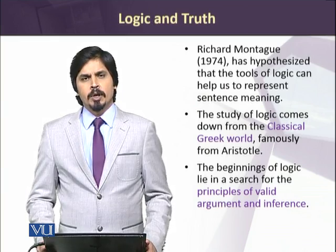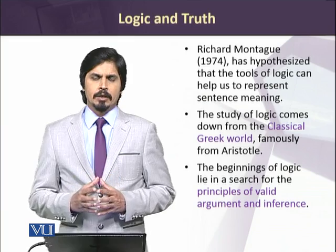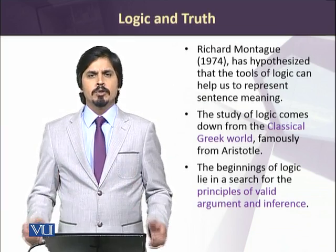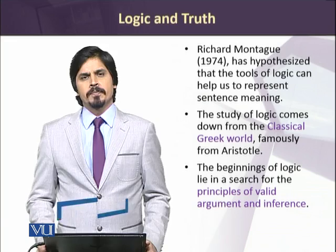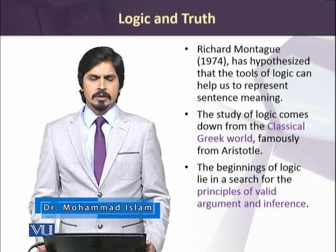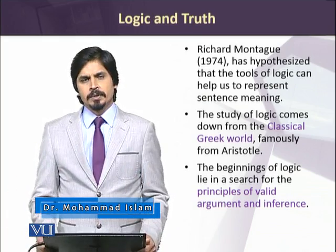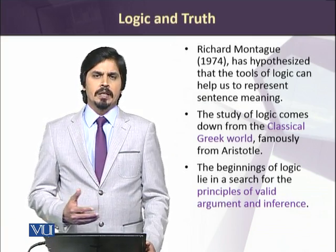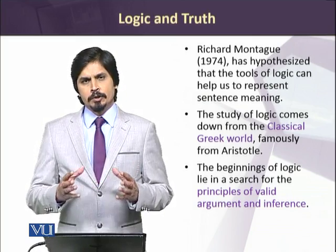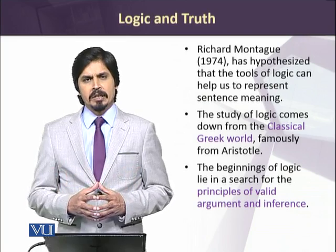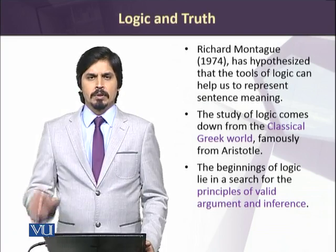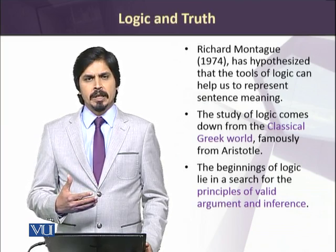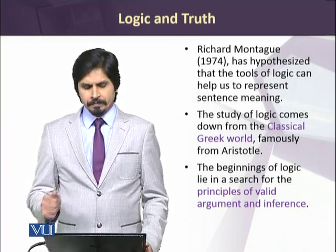This view comes from Richard Montague, who proposed that the principles of classical logic can be used to find the meanings of sentences. He proposed that if we could figure out the truth value of sentences, we could also find their meanings. According to him, the truth value is actually the meaning of sentences. Classical logic, which comes to us from Aristotle, is used to create certain conditions under which we can find the meanings of sentences.